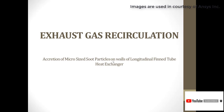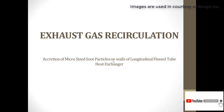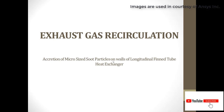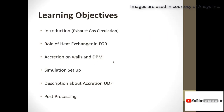In this video we will discuss the exhaust gas recirculation and the accretion of micro-sized soot particles on walls of a longitudinal fin-tube heat exchanger. When exhaust gas recirculation occurs, it needs to pass through a heat exchanger to remove heat, increasing engine efficiency. As it passes through, there is a probability that soot particles accumulate inside the heat exchanger. We will discuss the rate of accumulation and its effects on heat exchange properties, and simulate the accretion in ANSYS Fluent academic version.